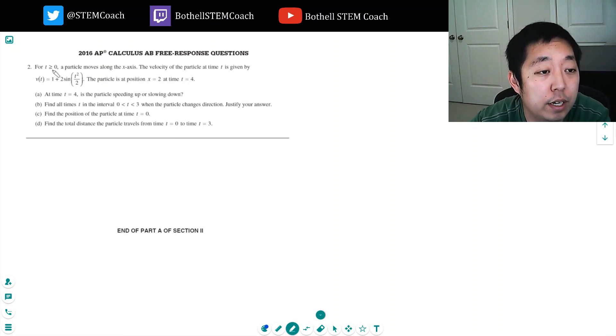So for t greater than or equal to 0, a particle moves along the x-axis. The velocity of the particle at time t is given by v(t) equals 1 plus 2 sine t squared over 2. The particle is at position x equals 2 at time equals 2.